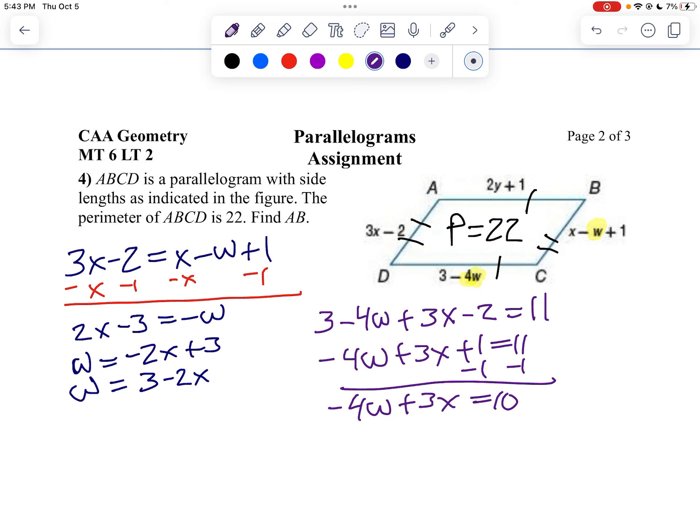Well, that doesn't get me much closer, but remember, I started with w equals 3 minus 2x. So instead of putting w in, I can say 3 minus 2x. So we're going to say negative 4 times 3 minus 2x plus 3x equals 10. Or negative 12 plus 8x plus 3x equals 10. Well, I'll add 12 to both sides. And then I'll combine my 8x and my 3x.